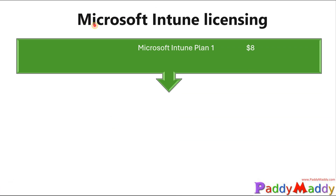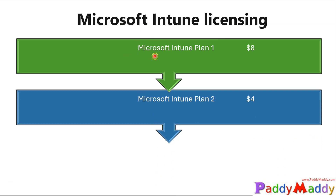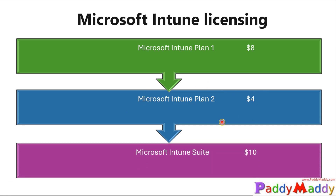Microsoft sells Microsoft Intune as a licensing product. The base product is Microsoft Intune Plan 1, which costs $8. If you want additional features, you add $8 plus purchase Intune Plan 2. If you want all features, you buy the Microsoft Intune Suite, which costs Plan 1 plus an additional $10 — close to $18 total. You can straightforwardly skip Plan 2 and go directly to the Suite.